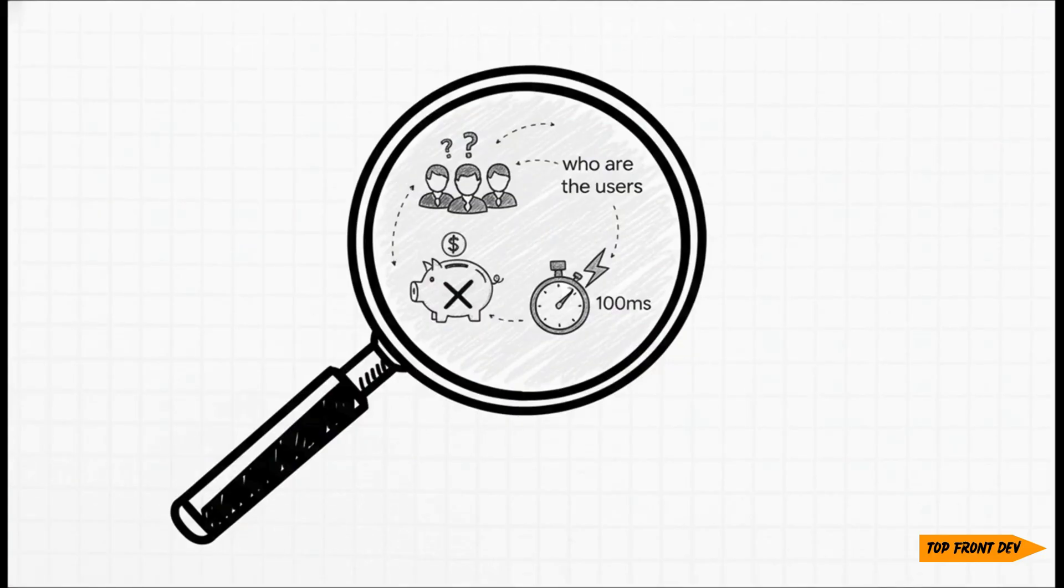So for step one, it's time to put on your detective hat. Who are we building this for? Are we talking about a thousand users or 10 million? Because that's going to tell you right away if you need something like a load balancer. What do they actually need? Is the system going to be mostly reading data or writing a ton of it? That could point you toward a SQL or a NoSQL database. And what are our limits? Does it have to respond in under 100 milliseconds? That probably means you need a caching layer like Redis. This info is absolute gold.